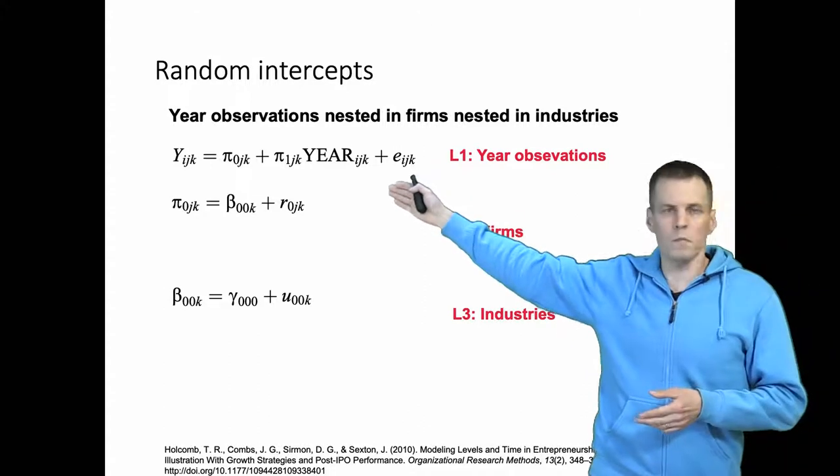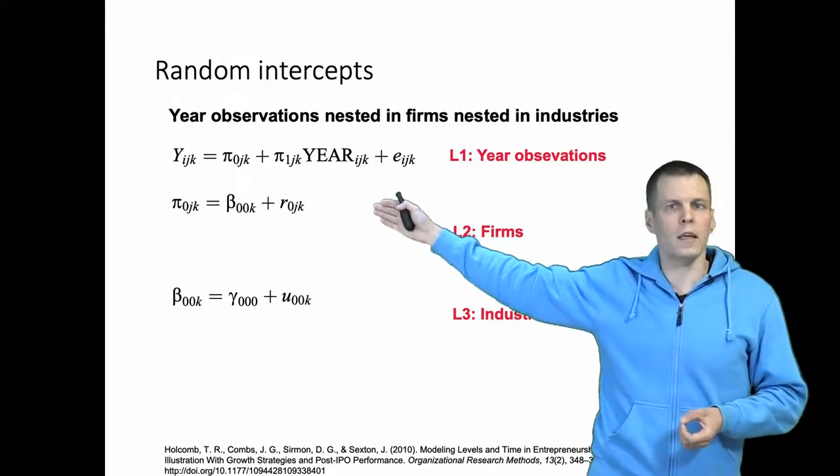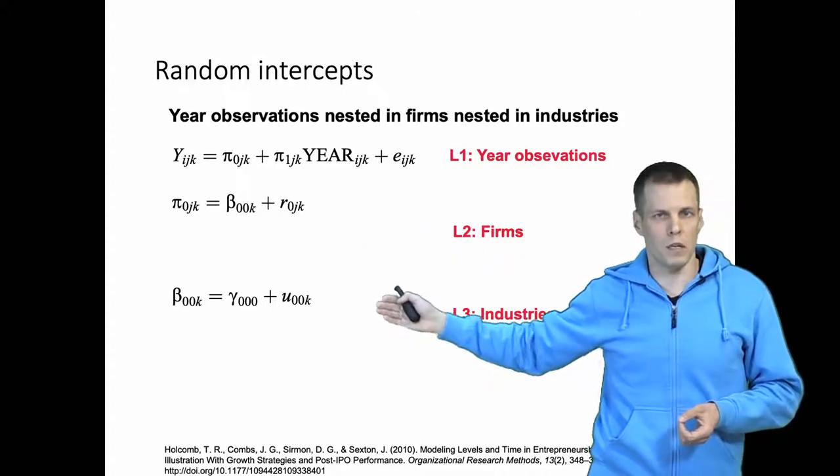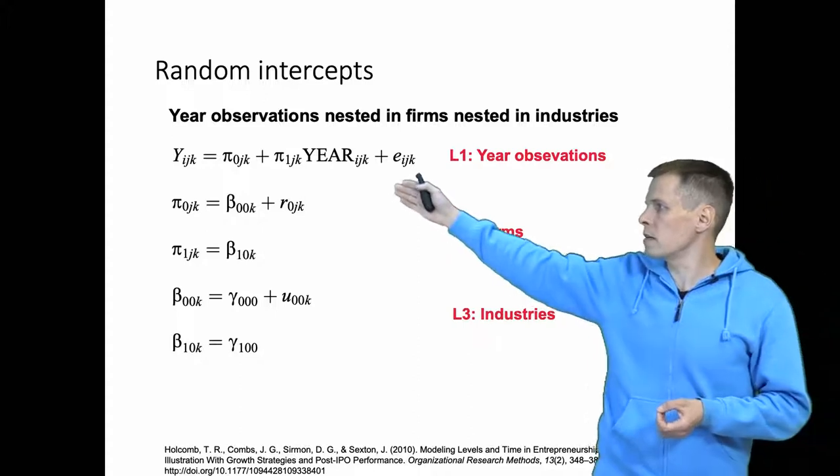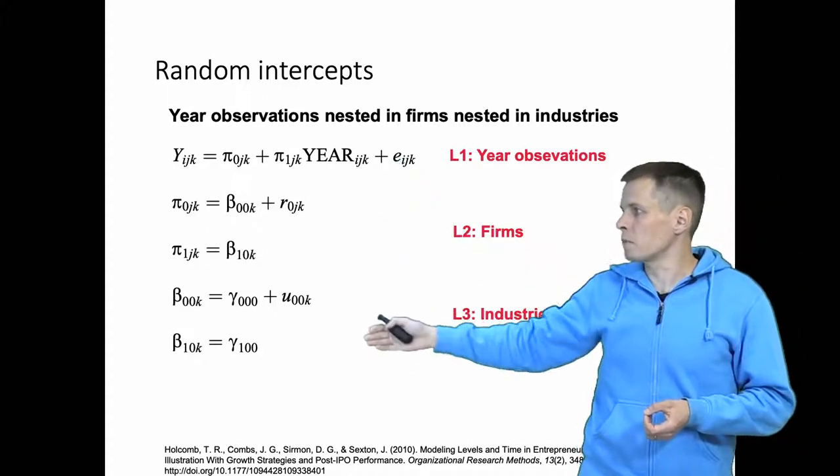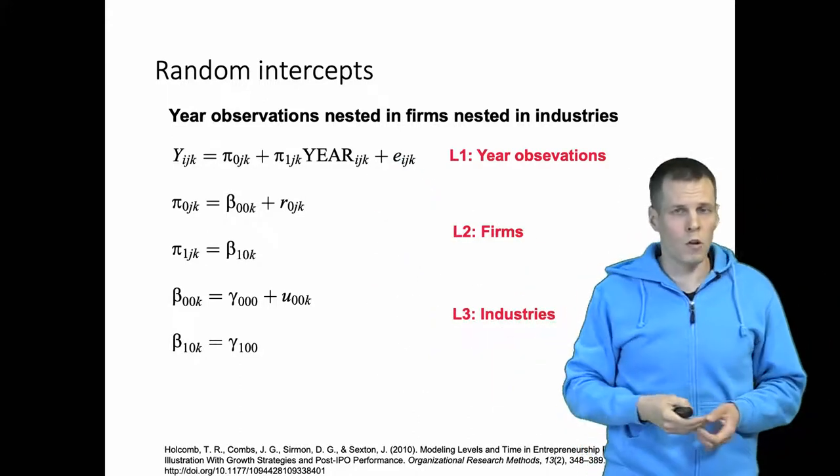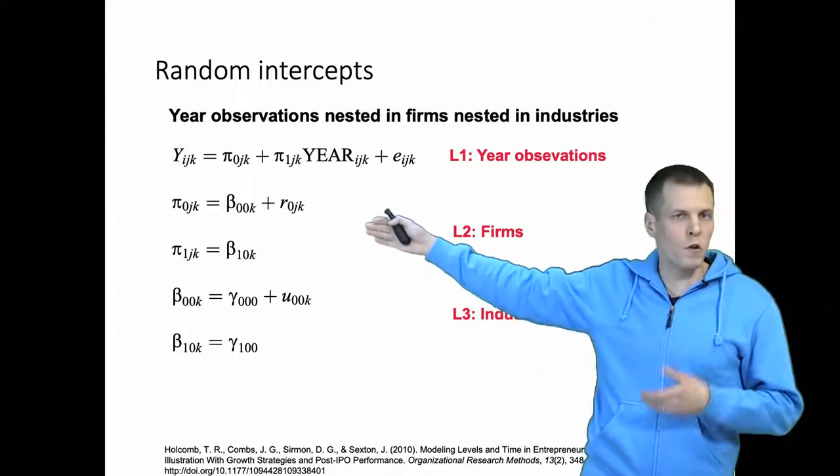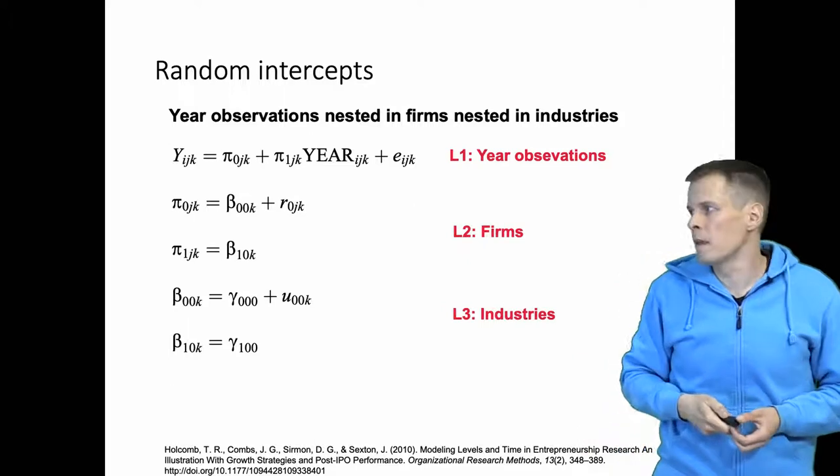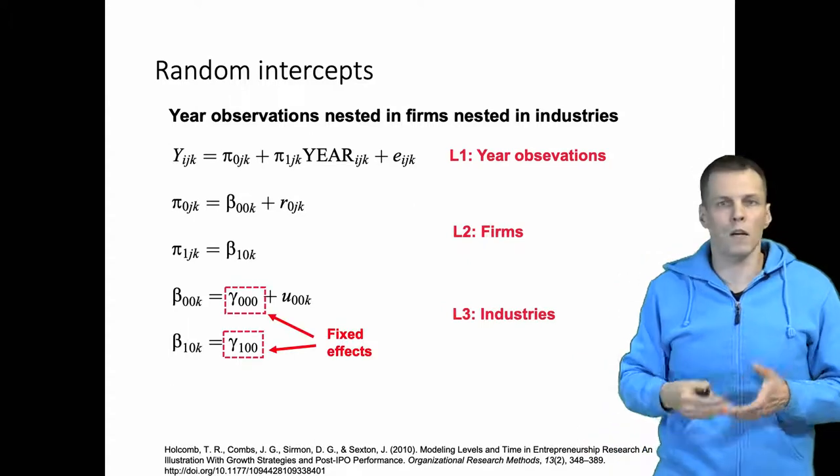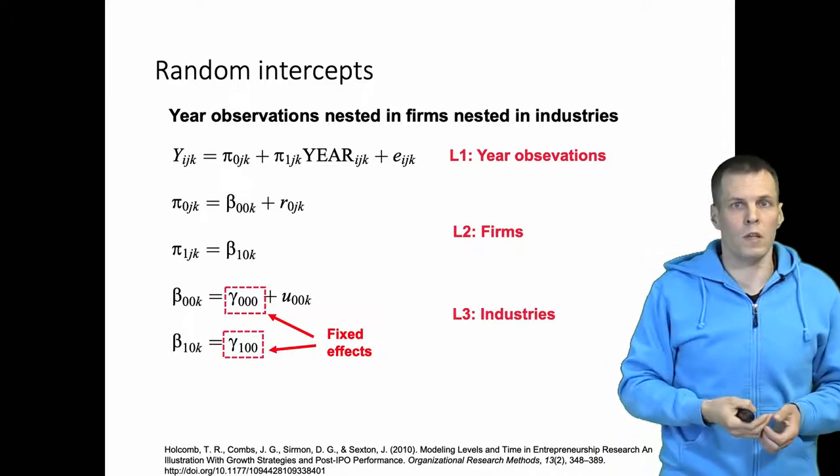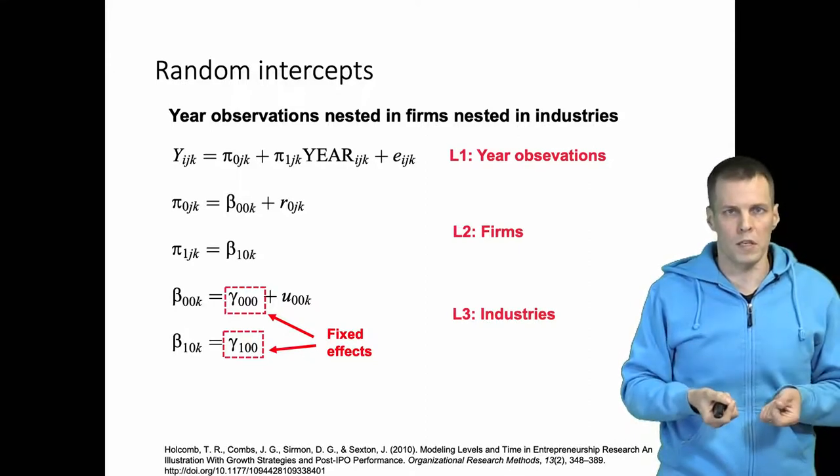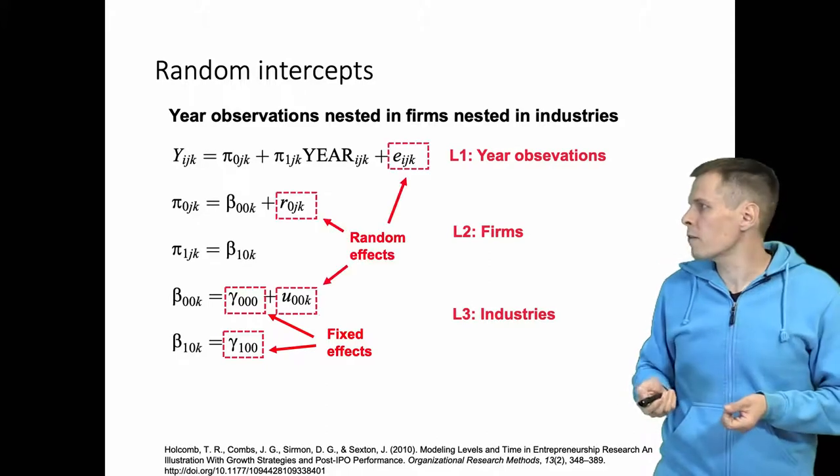We can see that the intercept varies between firms and it varies between industries. The slope here is constant, so we simply say that the slope is gamma 1 0 0 and there is no variation between firms, no variation between industries. So these gammas are what we call fixed effects. That is a specific value that we calculate that allows us to calculate predictions based on the model. And we have three random effects here.